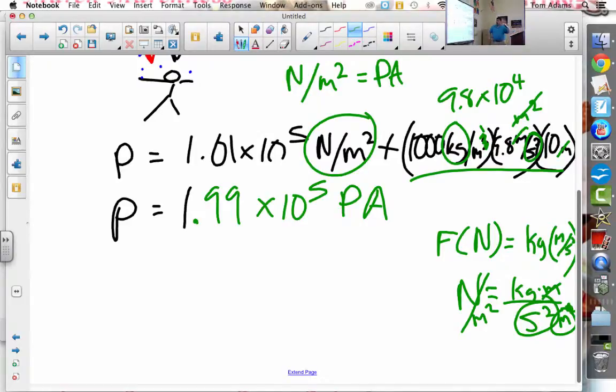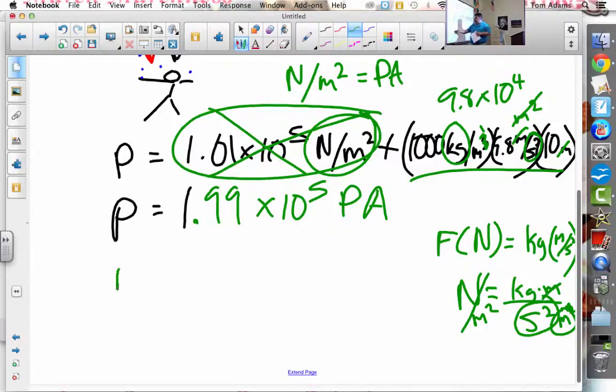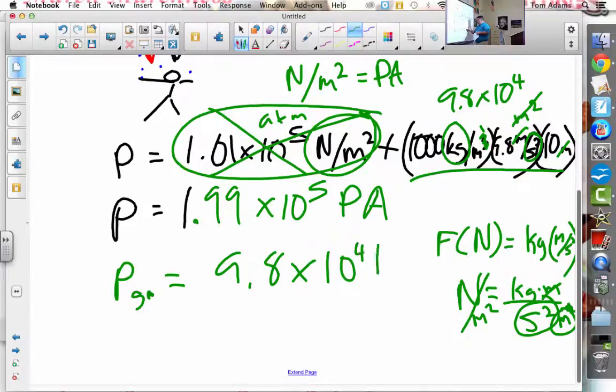So when they say gauge pressure, you're kind of ignoring this atmospheric pressure. So my gauge pressure is the stuff outside of atmospheric pressure. So this right here is your atmospheric pressure. So if you ignore that, it's 9.8 times 10 to the 4th. That's part B, which is the gauge pressure. So we don't need to count the pressure twice. Right? So if I had a gauge, the gauge will be made in atmospheric pressure. And so if I created a gauge in atmospheric pressure, then I don't need to count the atmospheric pressure twice. Does that make sense? Because the way the gauge is working...